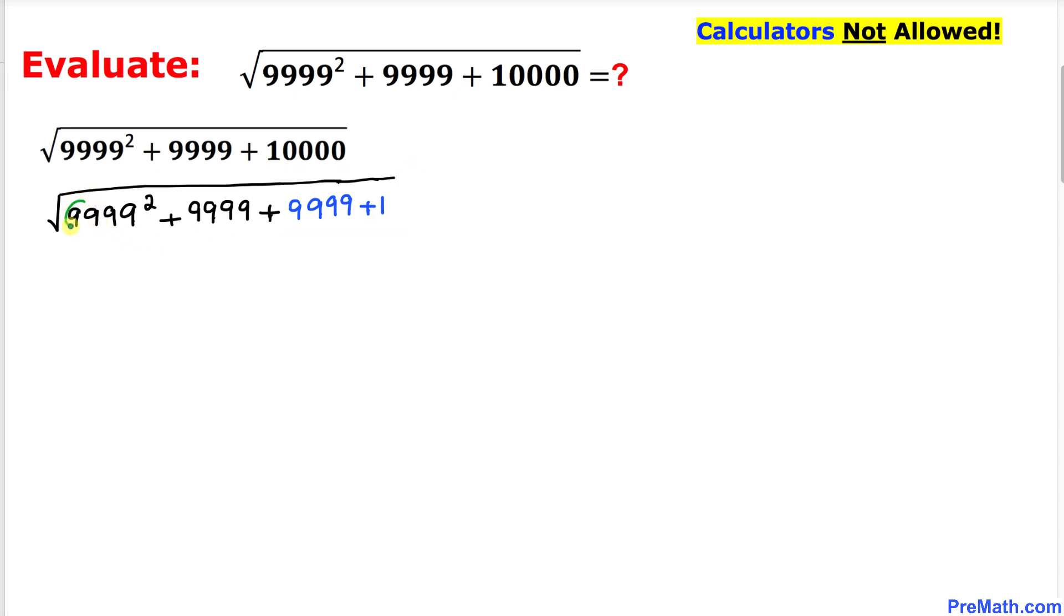Now let's focus on this 9999. We got a bunch of these ones, so therefore I am going to make a substitution and I'm going to say let x equal 9999.